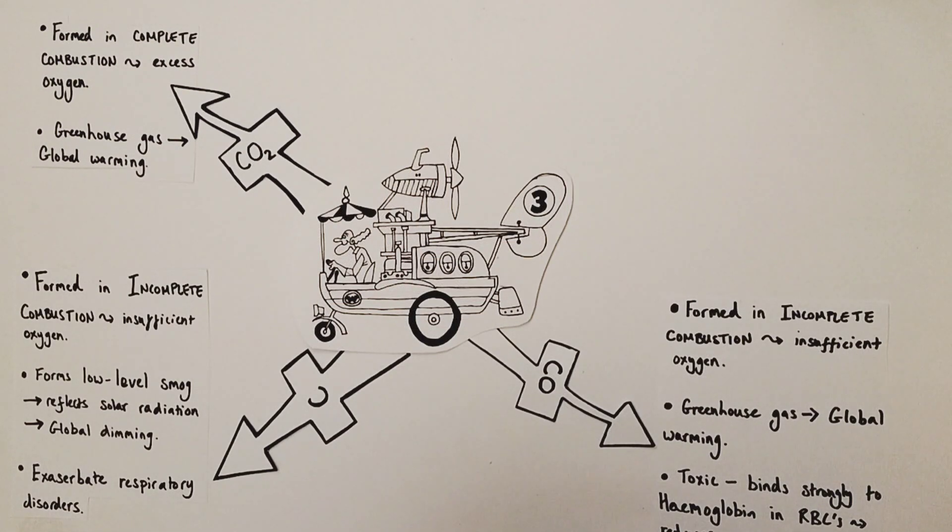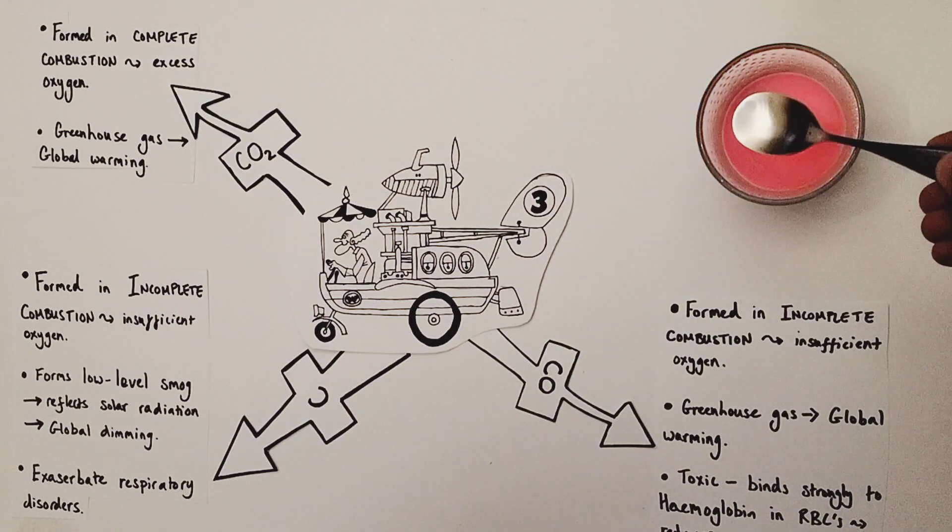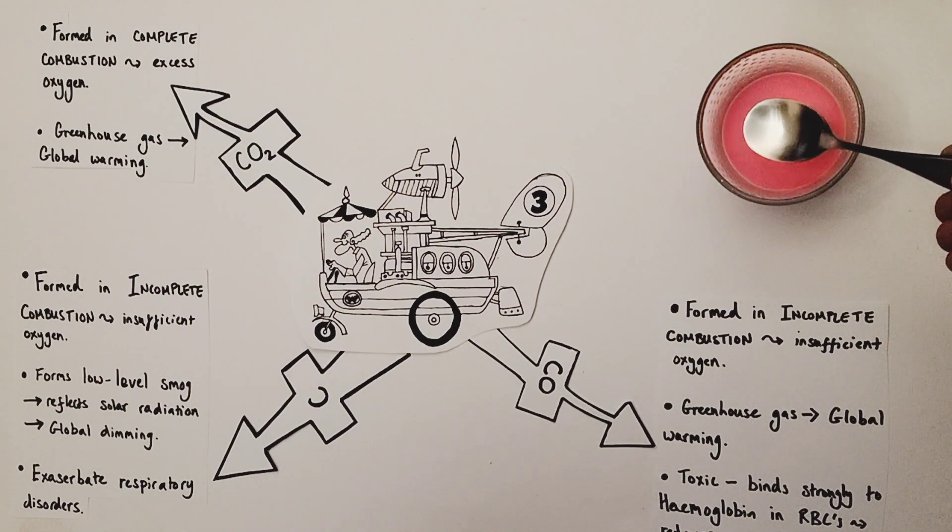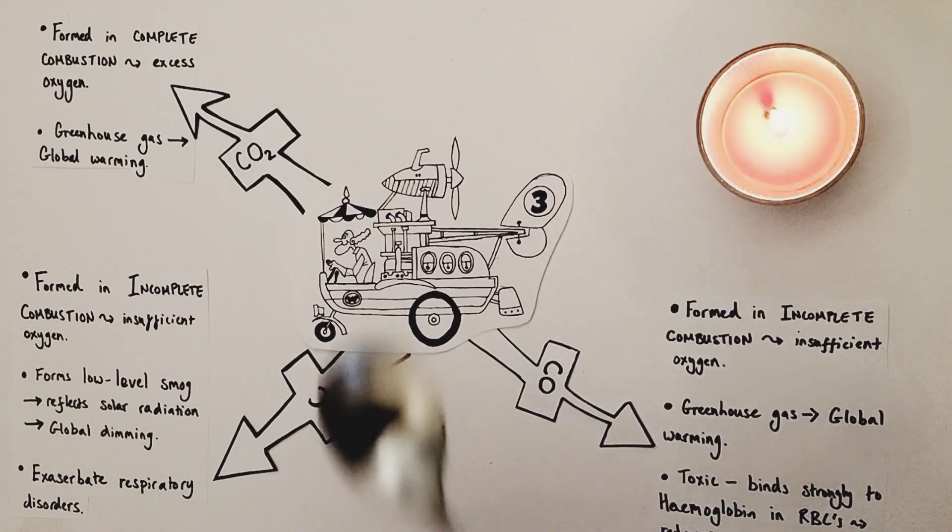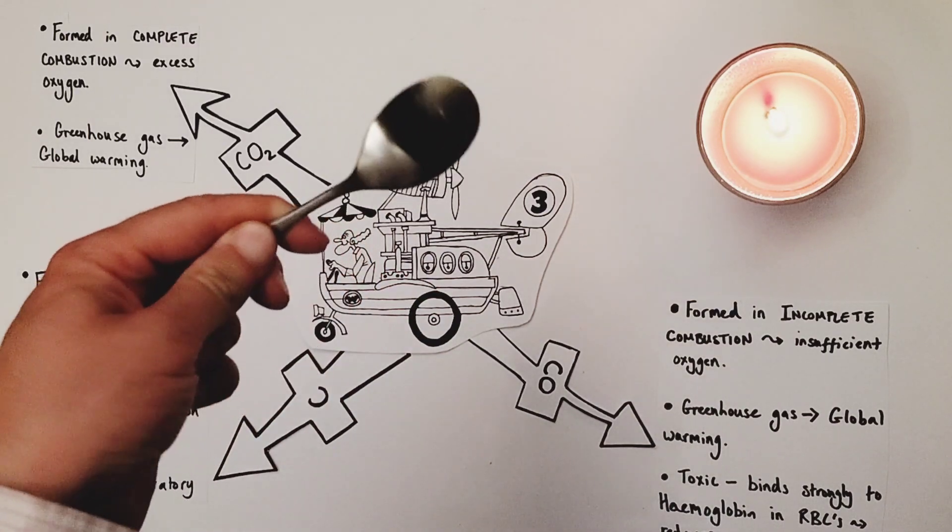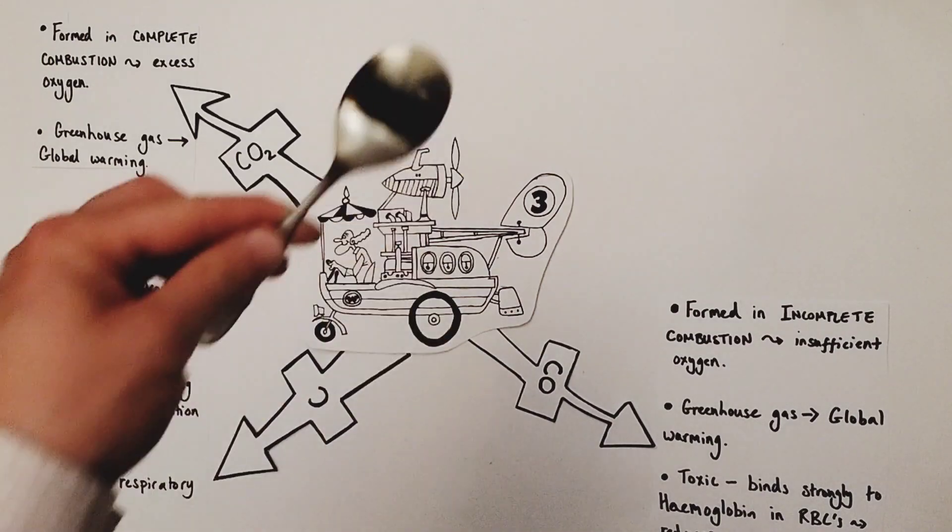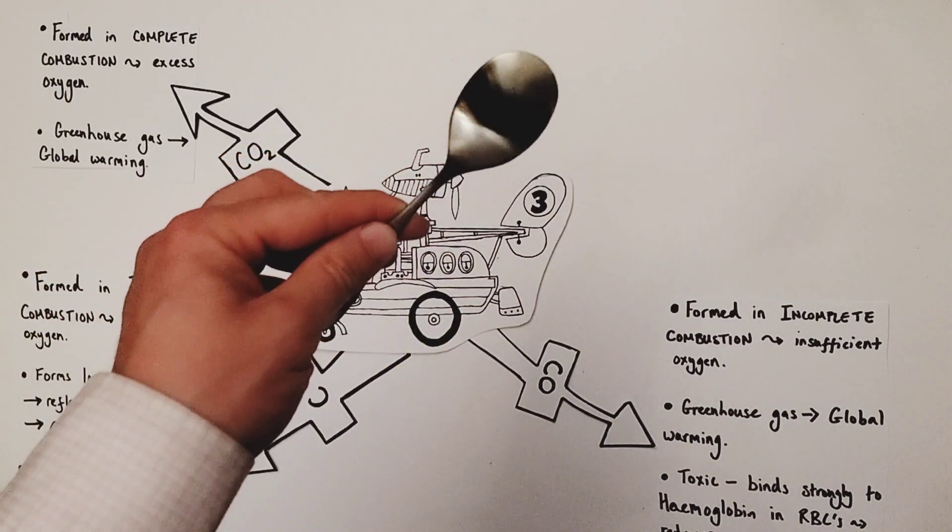Another possible product of the incomplete combustion of hydrocarbon fuels in insufficient oxygen are carbon particulates, effectively just carbon. And I can show you their formation really simply. If I take my scented candle from the kitchen and I smother the flame with a metal implement like a spoon for just a little while, there you go, really reducing its access to oxygen for a little while. And I turn the spoon over, you'll see a lot of black soot has now built up on the spoon's surface, all that black soot. That's a good example of carbon particulates building up on the surface of the spoon. Insufficient oxygen creating incomplete combustion there.